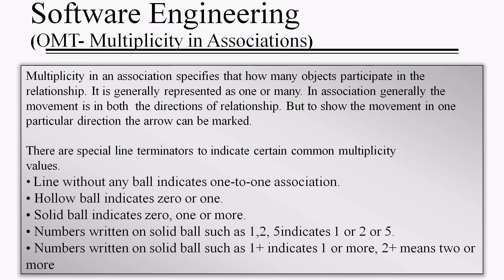There are special terminators to indicate certain common multiplicity values. A line without any ball indicates a one-to-one association. A hollow ball indicates zero or one association. A solid ball indicates zero, one, or more — meaning many. Numbers written on a solid ball such as 1, 2, or 5 indicate one, two, or five. Numbers written as 1+ indicate one or more; 2+ indicates two or more.